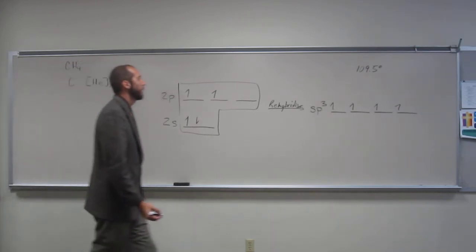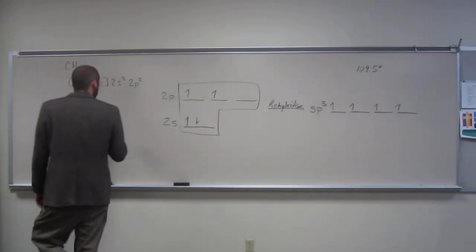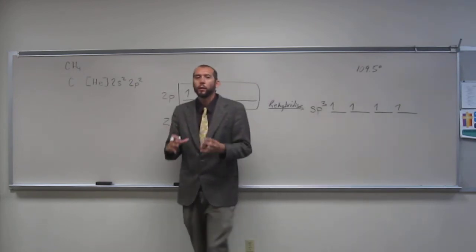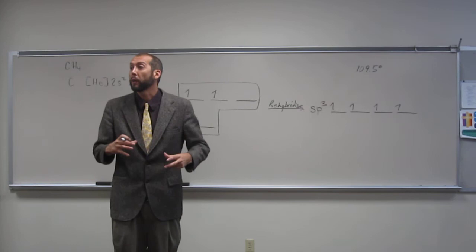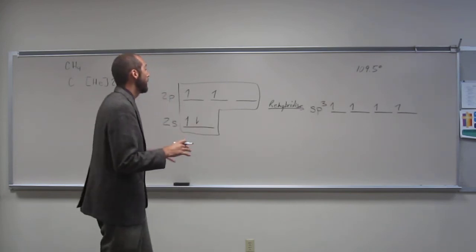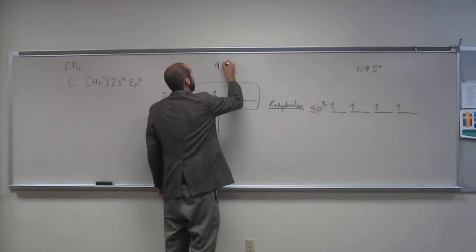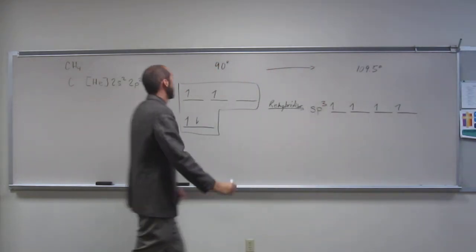So when we're talking about the bonding in methane, remember sp3 orbitals have a little bit of s character and a lot of p character, so they look kind of like p's. But their directionality has changed. Remember, this went from 90 degrees to 109.5.